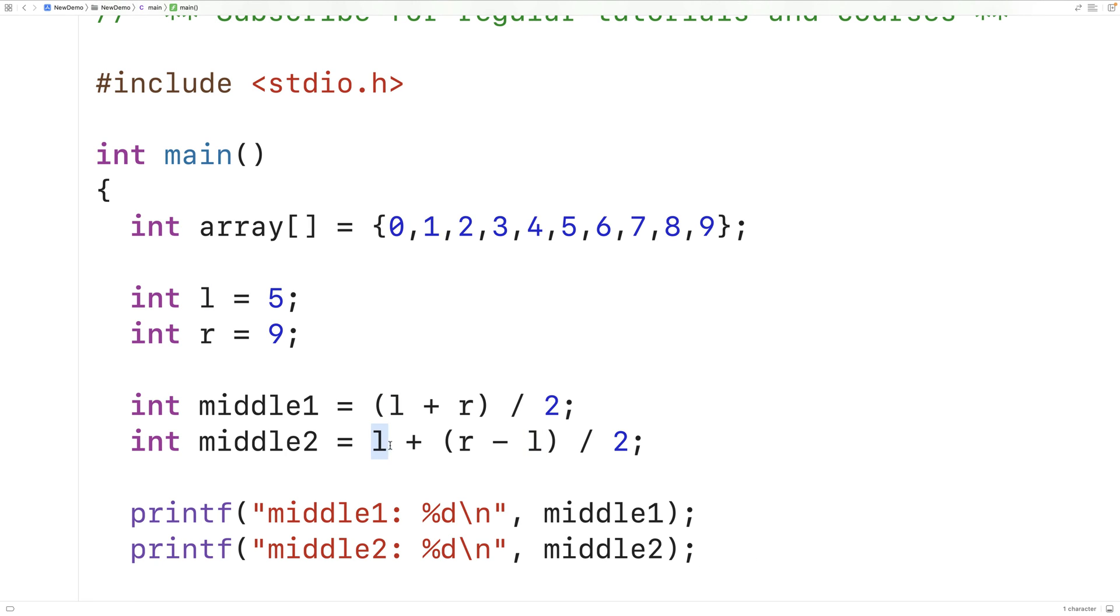But this approach here is less prone to integer overflow than this approach here. So what is integer overflow and why does that matter? Int variables can only store numbers that are so large. There's actually a constant INT_MAX that gives us the max number that an int variable can store.